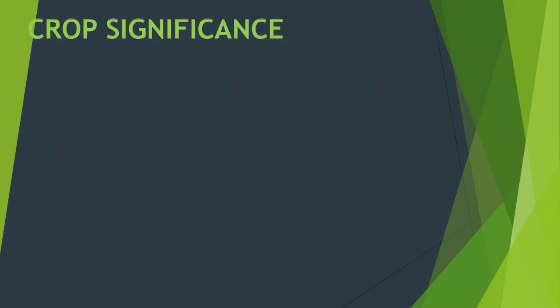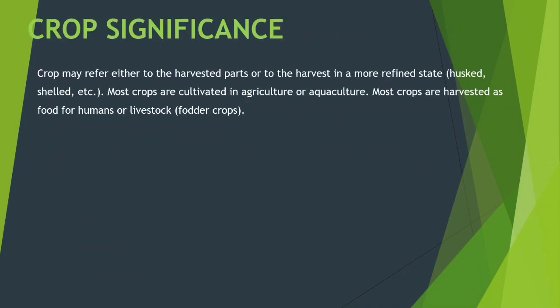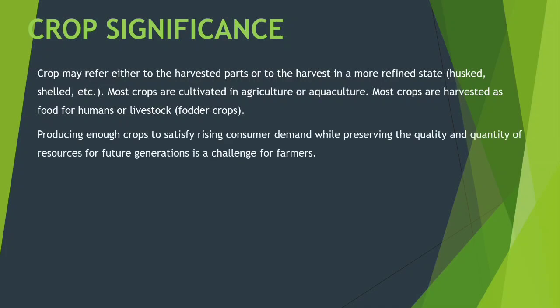Crop significance refers to the importance of crops. A crop may refer to the harvested part, including the more refined state — husks, shells, etc. Most crops are cultivated in agriculture and aquaculture and are harvested as food for humans or livestock. Producing enough crops to satisfy rising consumer demand while preserving the quality and quantity of resources for future generations is a key challenge for farmers.